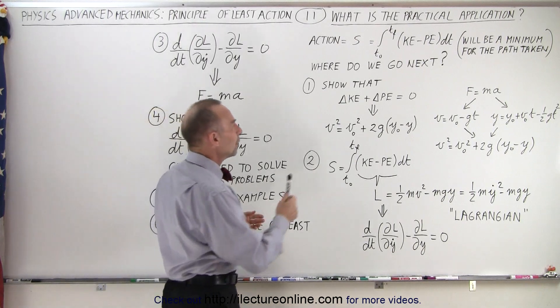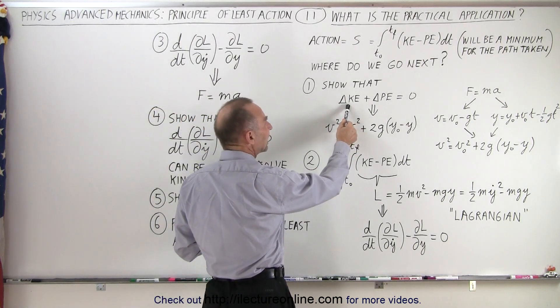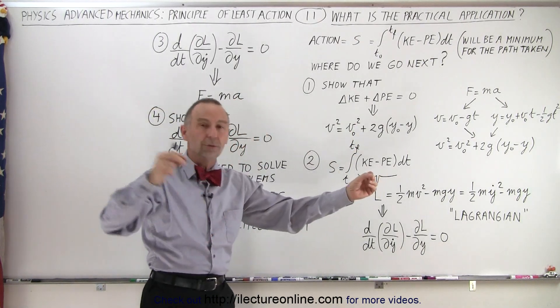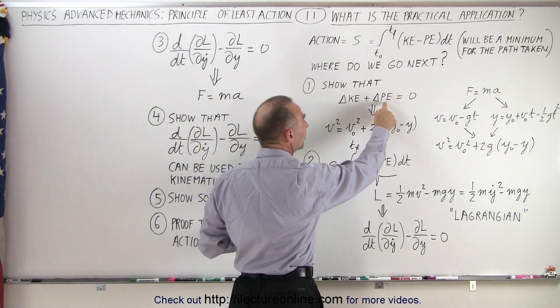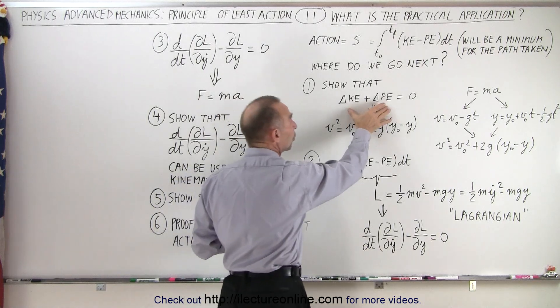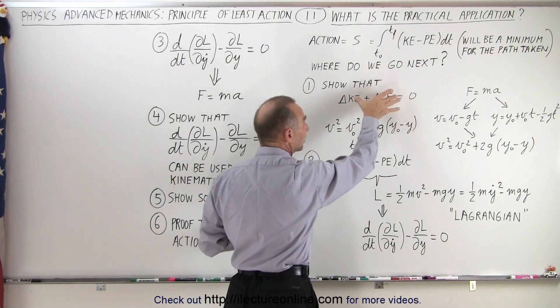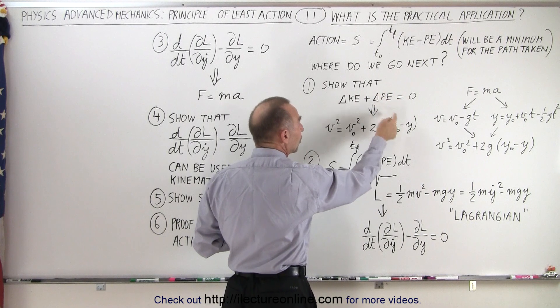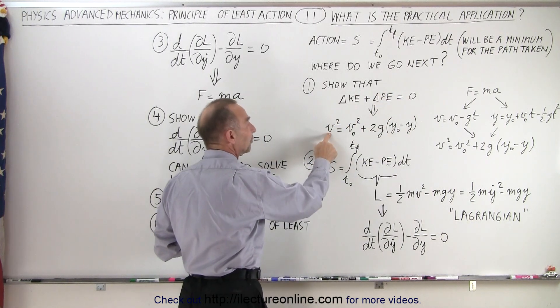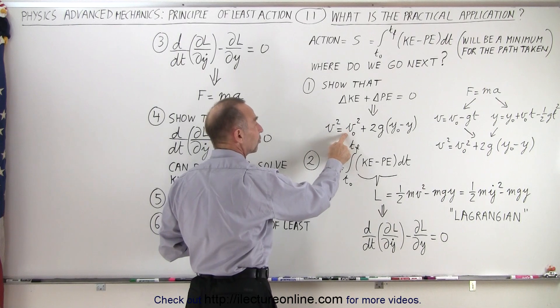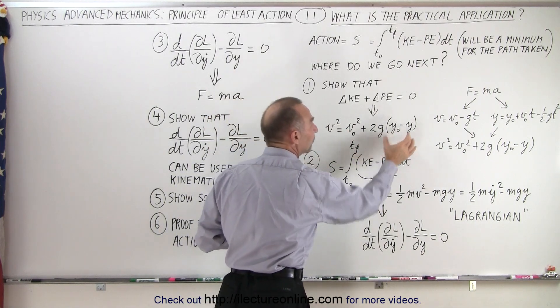First of all, we're going to show that the difference in the kinetic energy from point 1 to point 2 as we travel along a path, plus the difference in the potential energy as we travel along that path, the sum of those should equal zero. And if we then use that, we can show that this equation is true: the final velocity squared equals the initial velocity squared plus 2g times the difference in the height.